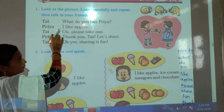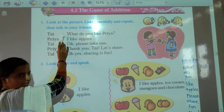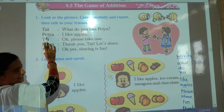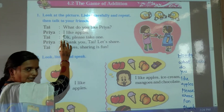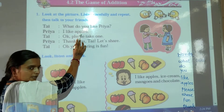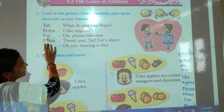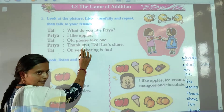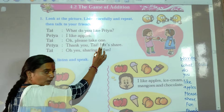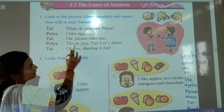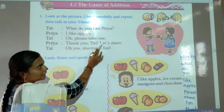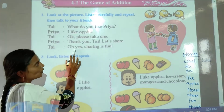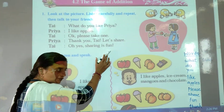So children, repeat after me. Thai says, what do you like Priya? Priya says, I like apples. Thai says, okay, please take one. Priya says, thank you Thai. Let's share. Thai says, oh yes, sharing is fun.